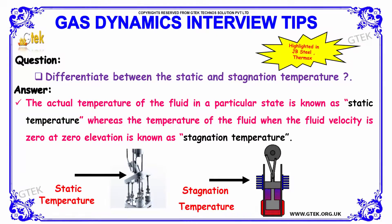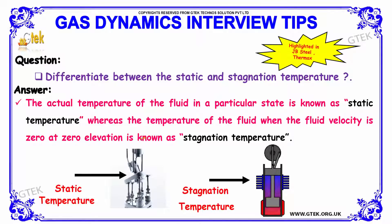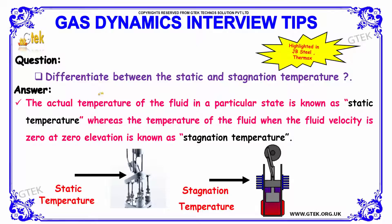The next question: differentiate between static and stagnation temperature. The actual temperature of the fluid in a particular state is known as static temperature. Whereas when the fluid velocity is zero at zero elevation, it is said to be called as stagnation temperature. This is all about stagnation and static temperatures.